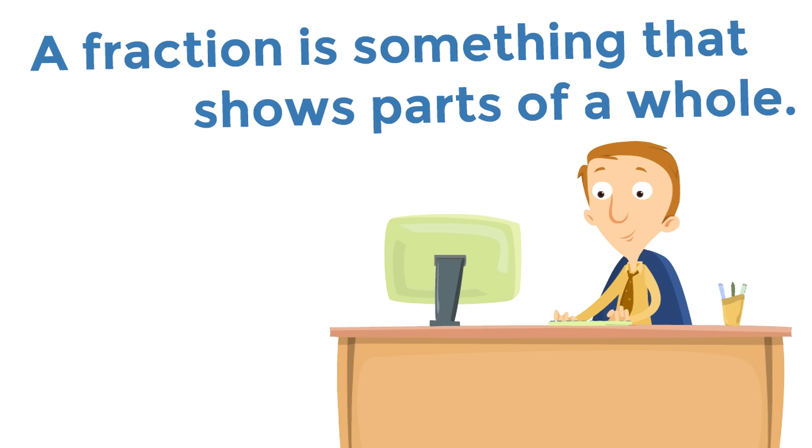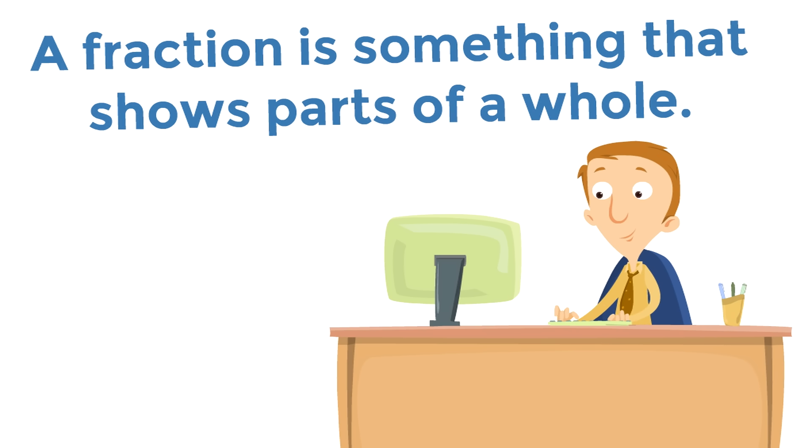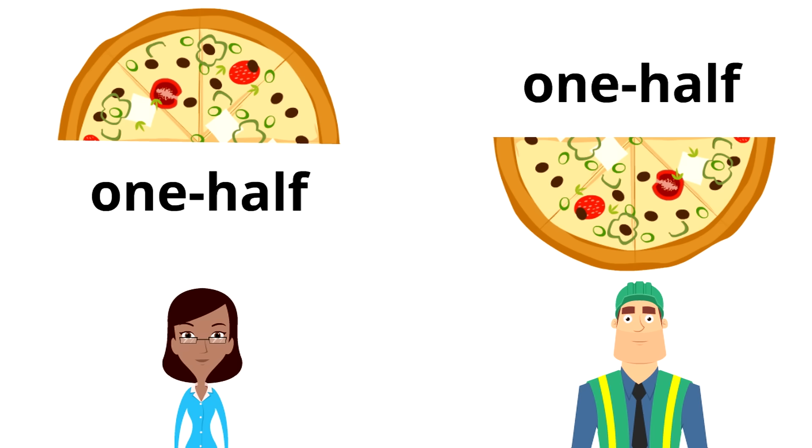Now remember, a fraction is something that shows parts of a whole. So here is what the fraction looks like. A one, a line, and a two. That is the fraction one half. Each of them, Cindy and Chomsky, get one half of the pizza. So this is one half. It's a very important fraction because we use it all the time. Now you might be wondering, what do the numbers mean and how does it show one half?